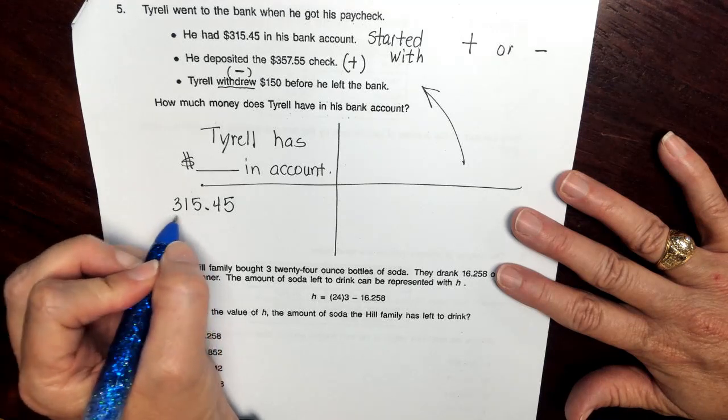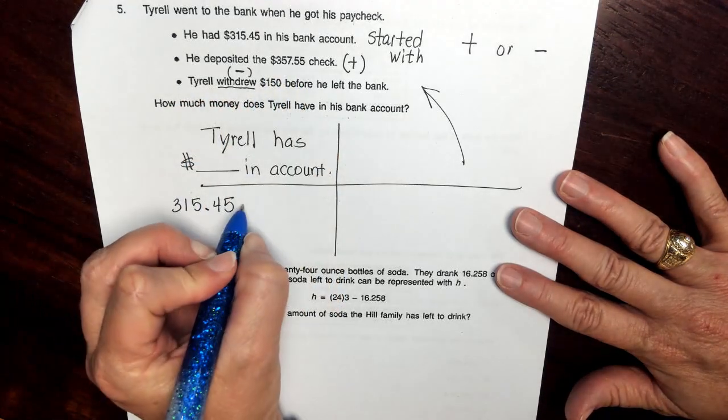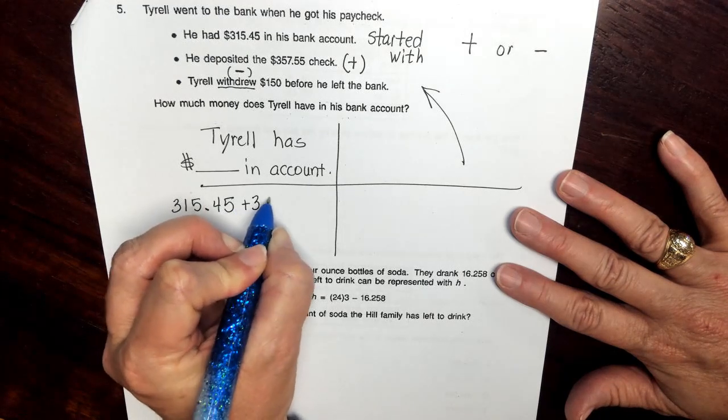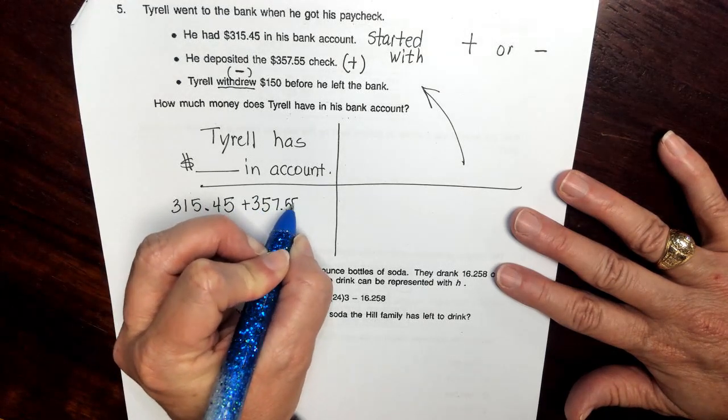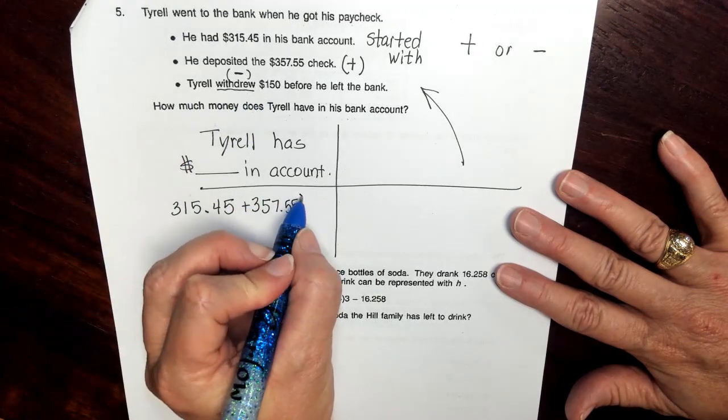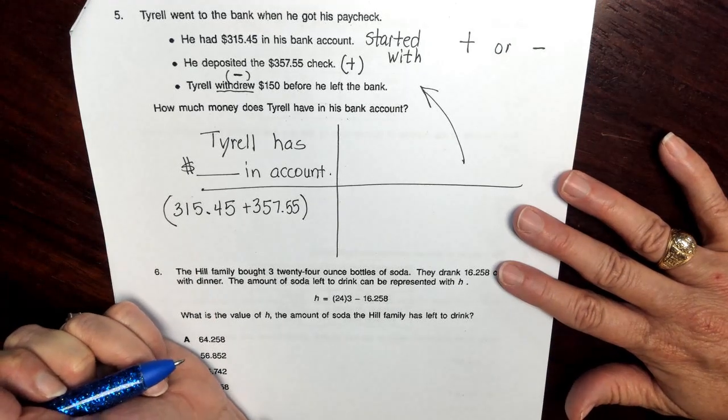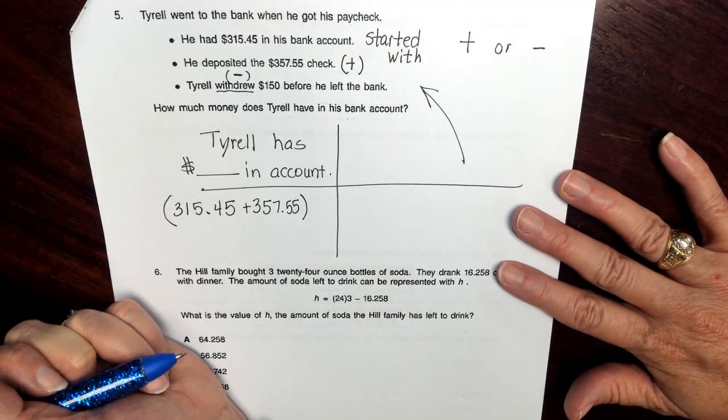Now what are we going to do with the $315.45? Well, we're going to add $357.55. So because we're going to be adding that first, I'm going to go ahead and put parentheses around this so that I know that I want to put those things together first.